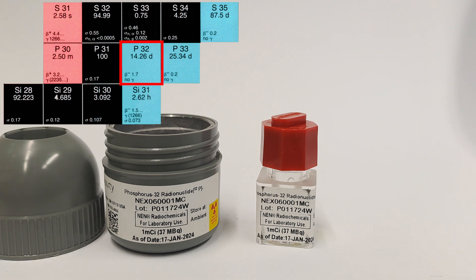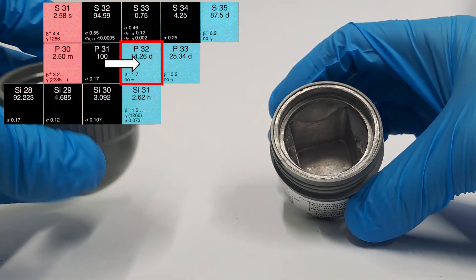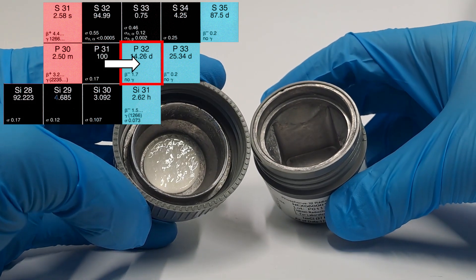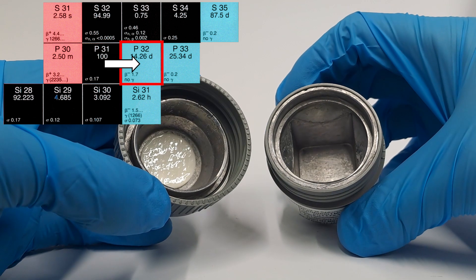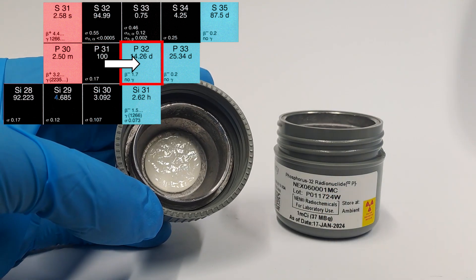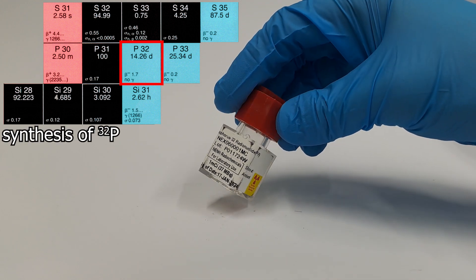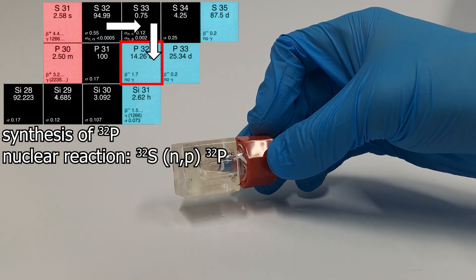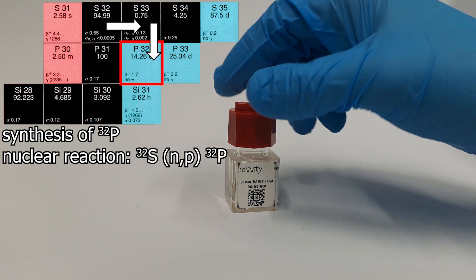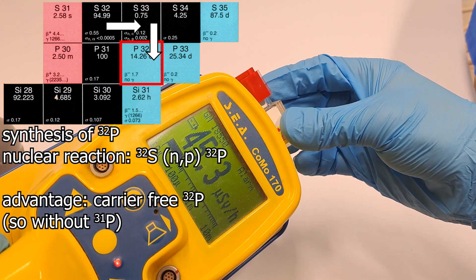The radionuclide used here is carrier-free phosphorus-32. You might think that phosphorus-32 is produced through a simple N-gamma reaction in a reactor by neutron irradiation of natural phosphorus. However, that is not the case because you wouldn't convert all of the phosphorus-31, leaving you with a mixture. If you want pure phosphorus-32, as we have here, it is produced through an N-P reaction with sulfur. Sulfur-32 is converted into phosphorus-32 and due to the different chemistry, pure phosphorus-32 is obtained, which can be used for research.